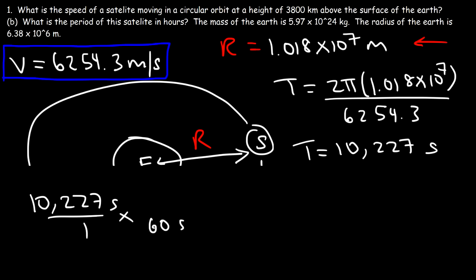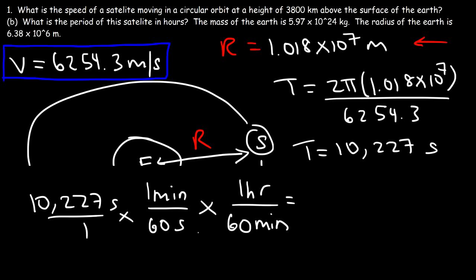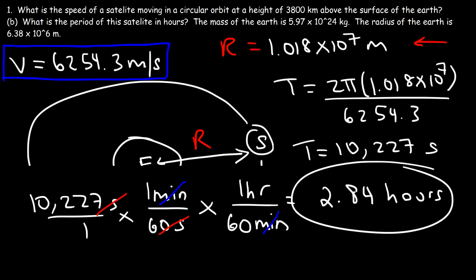Now let's convert that into hours. There are 60 seconds in a minute and 60 minutes in one hour, so we can cancel the units seconds and minutes: 10,227 divided by 60, divided by 60 again. The period is about 2.84 hours — that's how long it takes for this satellite to orbit the Earth at this speed and at this orbital radius.